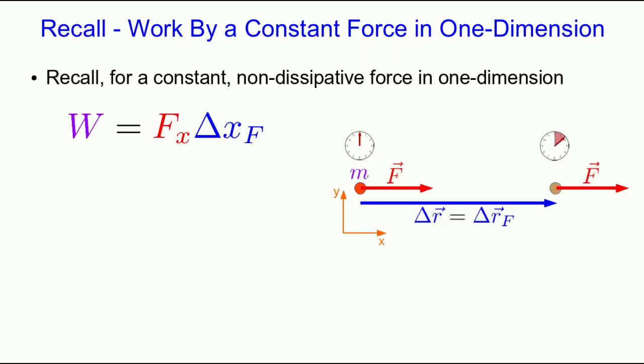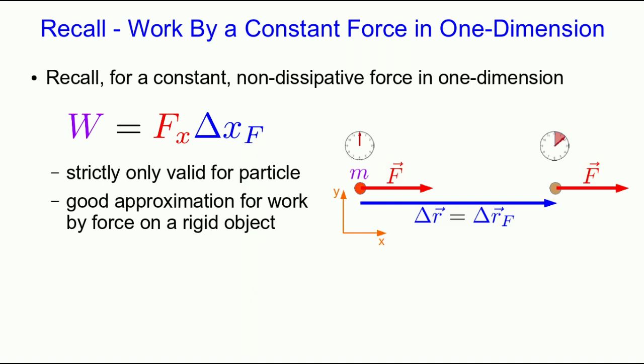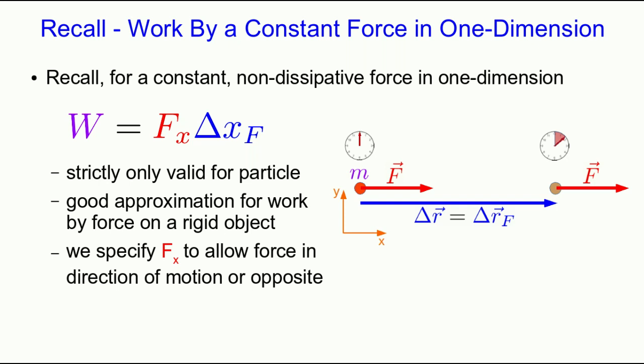Remember that for a constant non-dissipative force acting on a particle in one dimension, the work was just the product of the x-component of the force and the x-component of the force displacement vector. This is strictly only valid for a force acting on a particle, but it's a good approximation for the work by a force on a rigid object. We're specifying f_x and delta x_f as vector components, but in this case the vectors are parallel, so those components are either positive or negative.